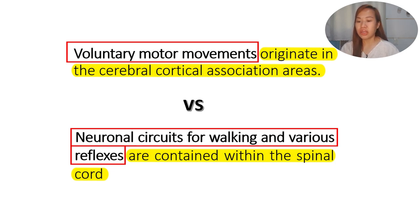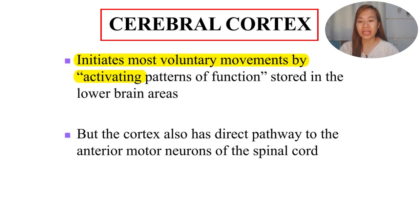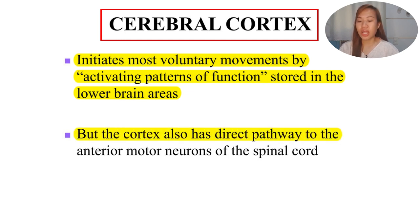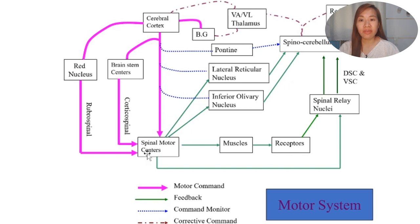What we're going to talk about today is voluntary motor control of our movements. The cerebral cortex initiates most voluntary movements by activating patterns of function stored in the lower brain areas. The cortex also has a direct pathway to the anterior motor neurons of the spinal cord - this is the direct pathway from the cortex, where neural transmissions go directly to the spinal motor centers, specifically to the anterior motor neurons, which activate the muscles to cause movement.